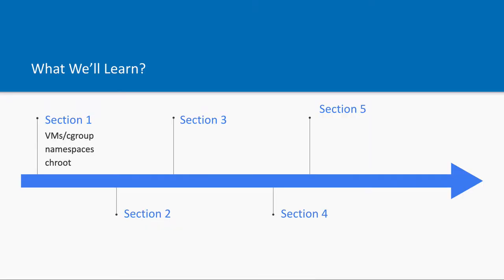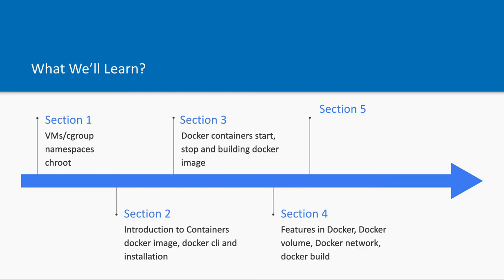This crash course is divided into five sections. Section one talks about how Docker containerization is possible on Linux, because we are using Linux container technology LXC, which provides three things: cgroups, namespaces, and chroot. Combining all three, we are able to create an isolated container environment for our application services, and we will go deep into understanding that.